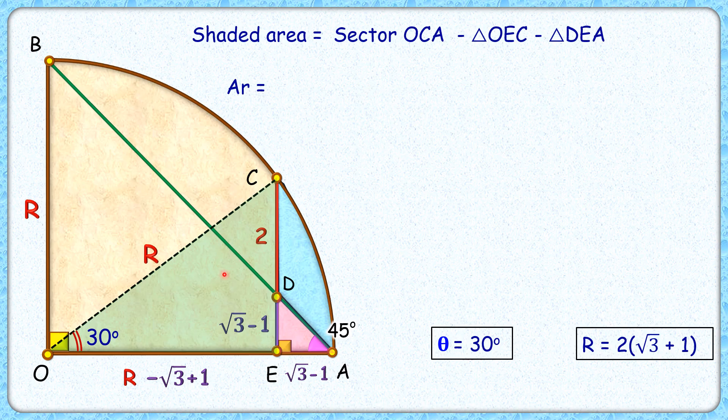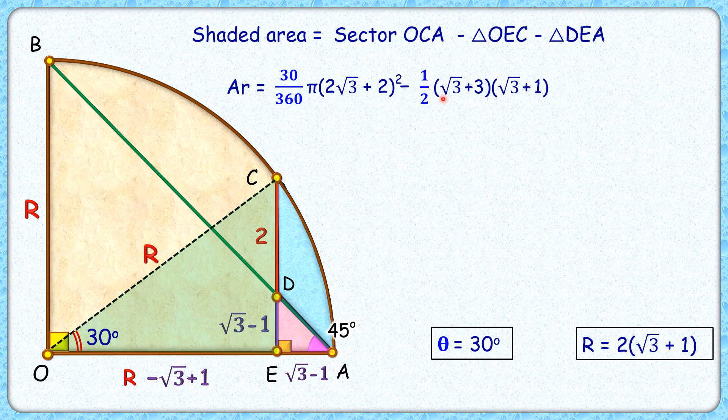The area of sector is theta by 360 into pi R squared, so that will be 30 by 360 into pi into R squared. R is 2 root 3 plus 2. Area of green triangle is half of base into height, so base will be 2 root 3 plus 2 minus root 3 plus 1, which is root 3 plus 3. Height is root 3 plus 1. Minus area of pink triangle, that's half of root 3 minus 1 times root 3 minus 1.